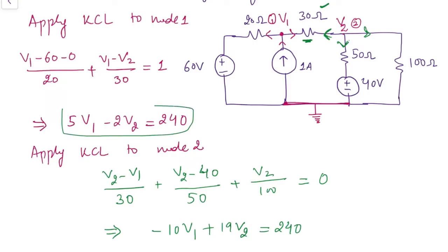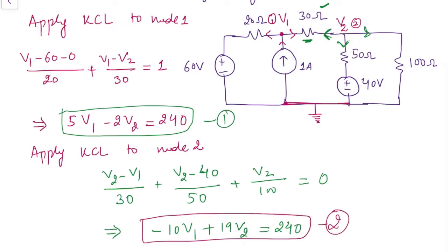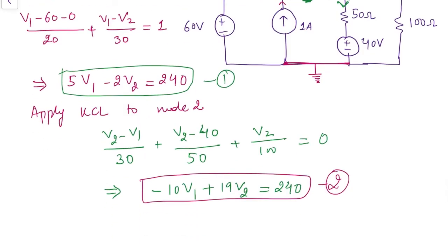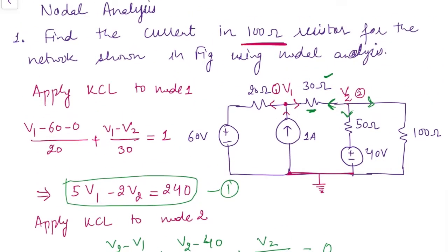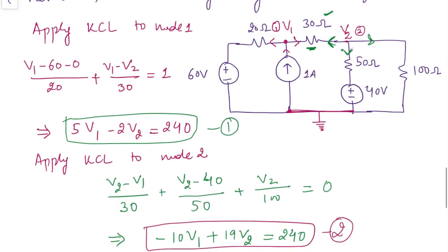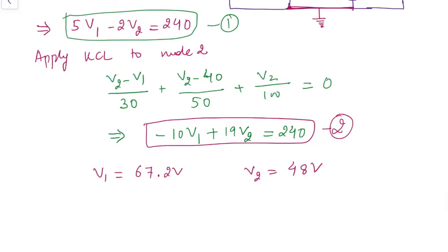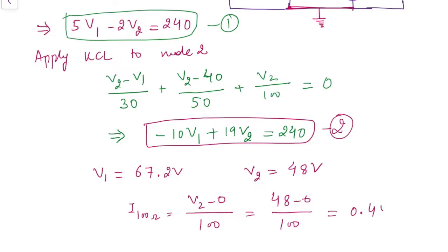Simplifying that equation gives the second equation: minus 10V1 plus 19V2 equals 240. We now have two equations and two unknowns, V1 and V2. Solving them simultaneously gives V1 as 67.2 volts and V2 as 48 volts. The current through the 100 ohm resistance is V2 / 100, which is 48 / 100, so the current is 0.48 amperes. This is how we use nodal analysis for the given network.